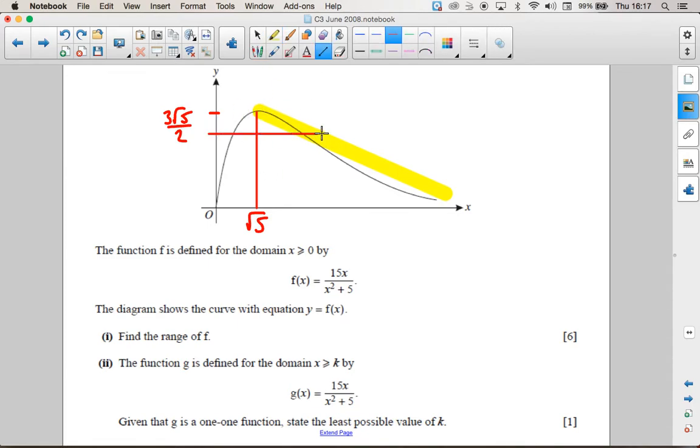It's not a one-to-one function here because it crosses through the curve twice. But it is a one-to-one function if this part of the curve didn't exist.